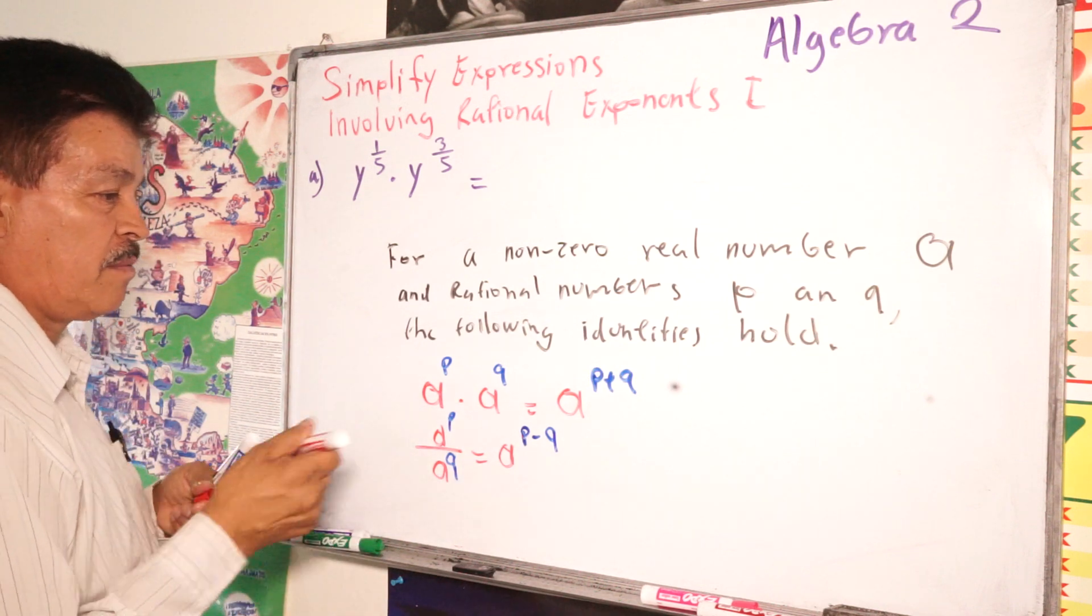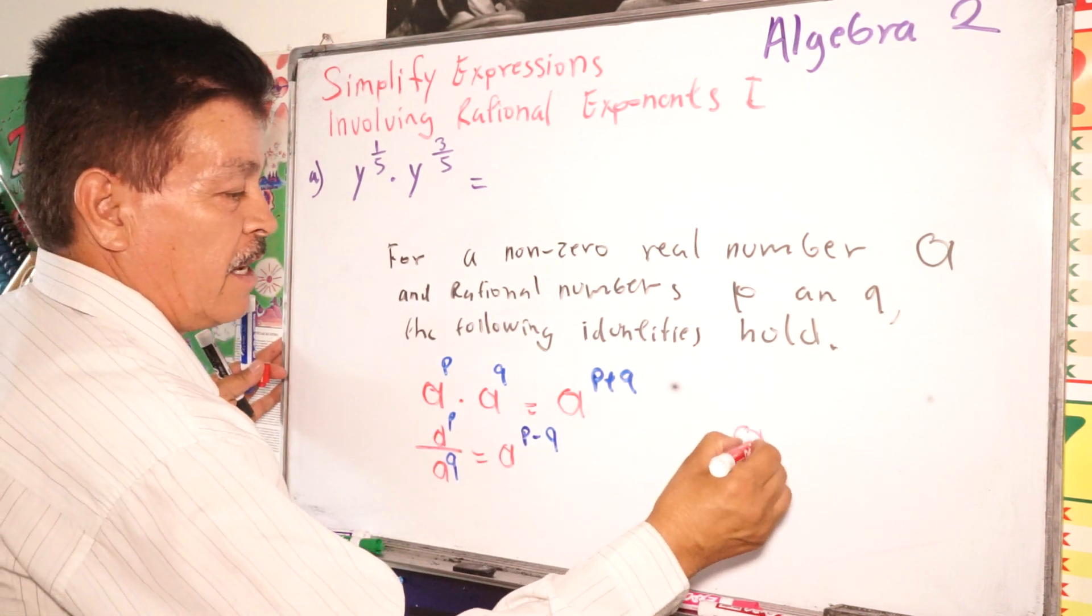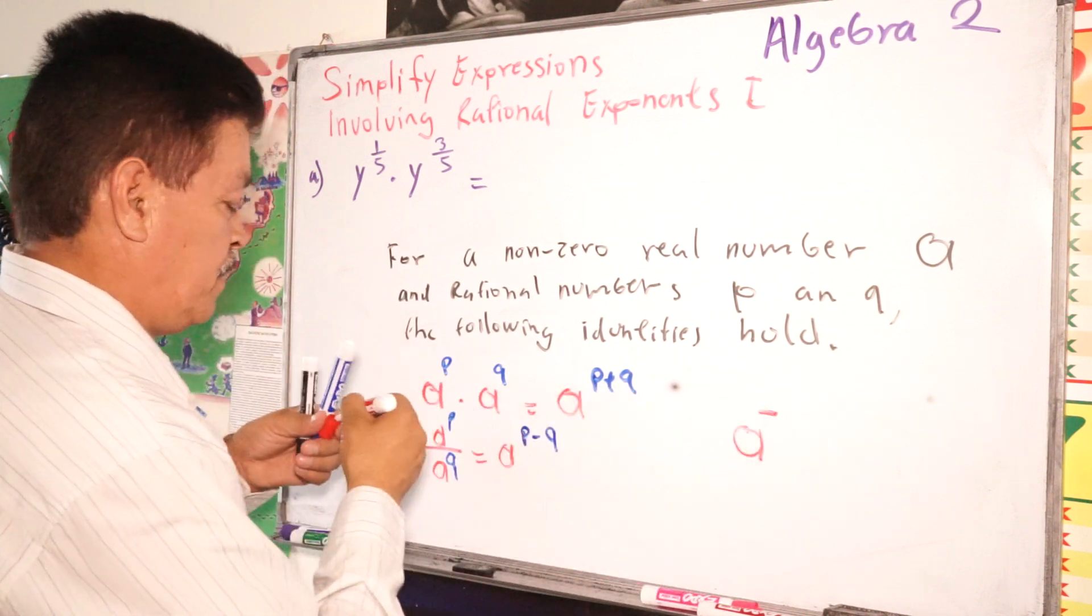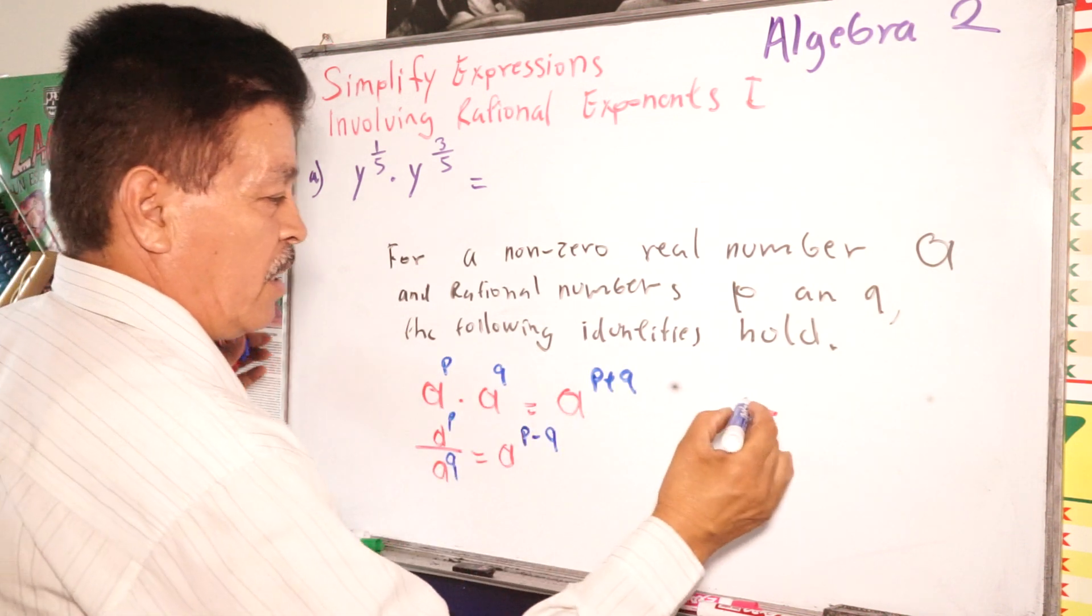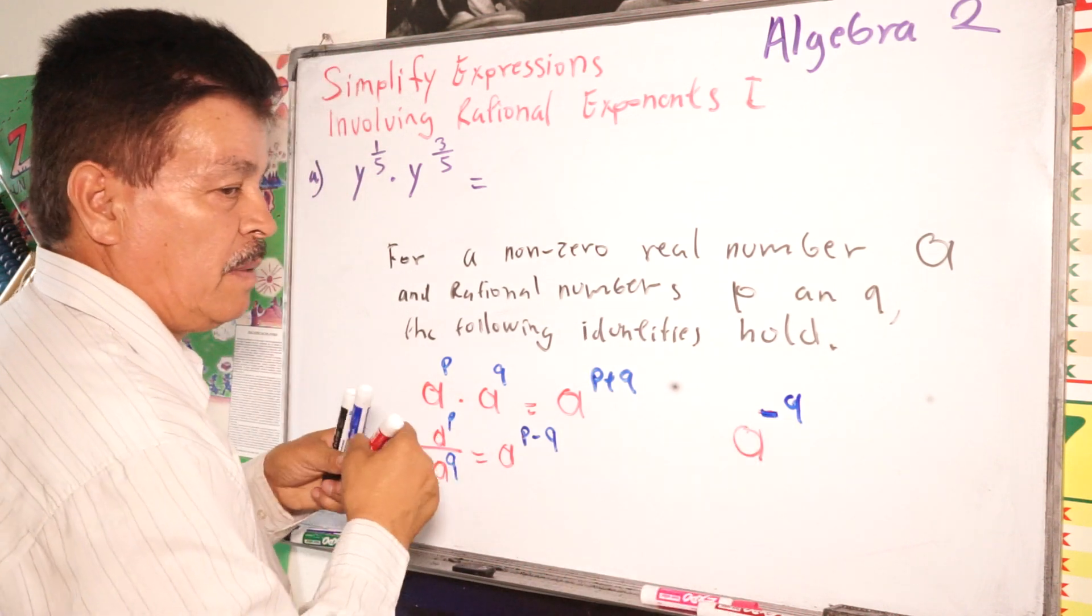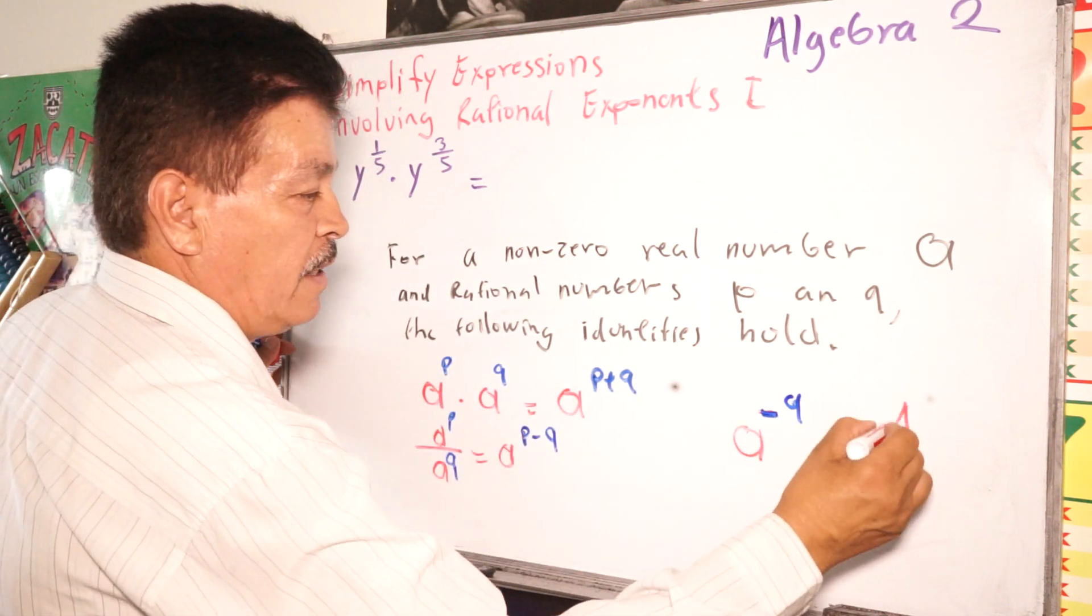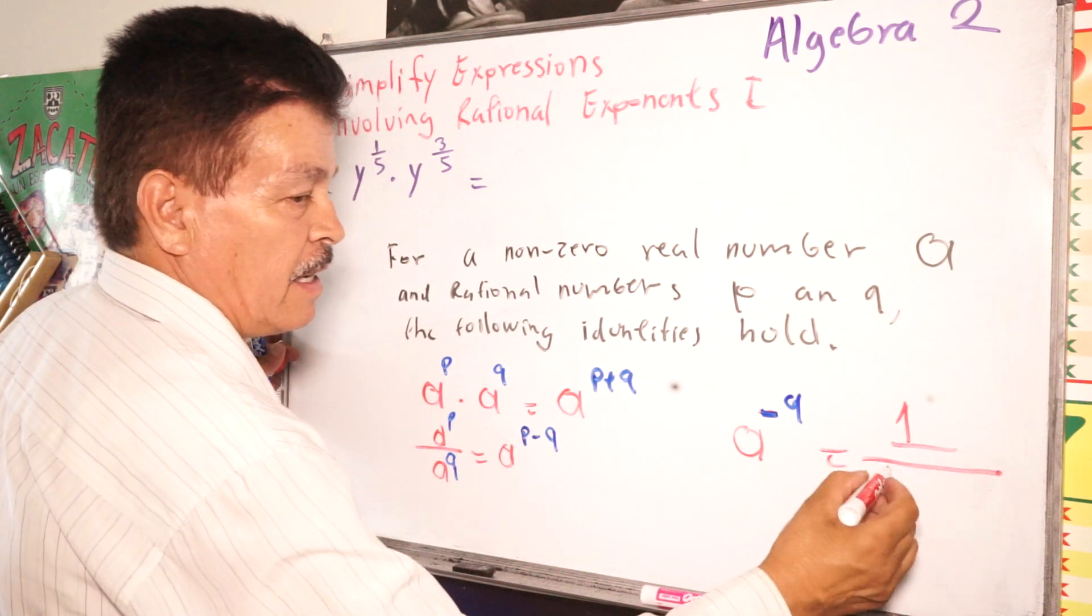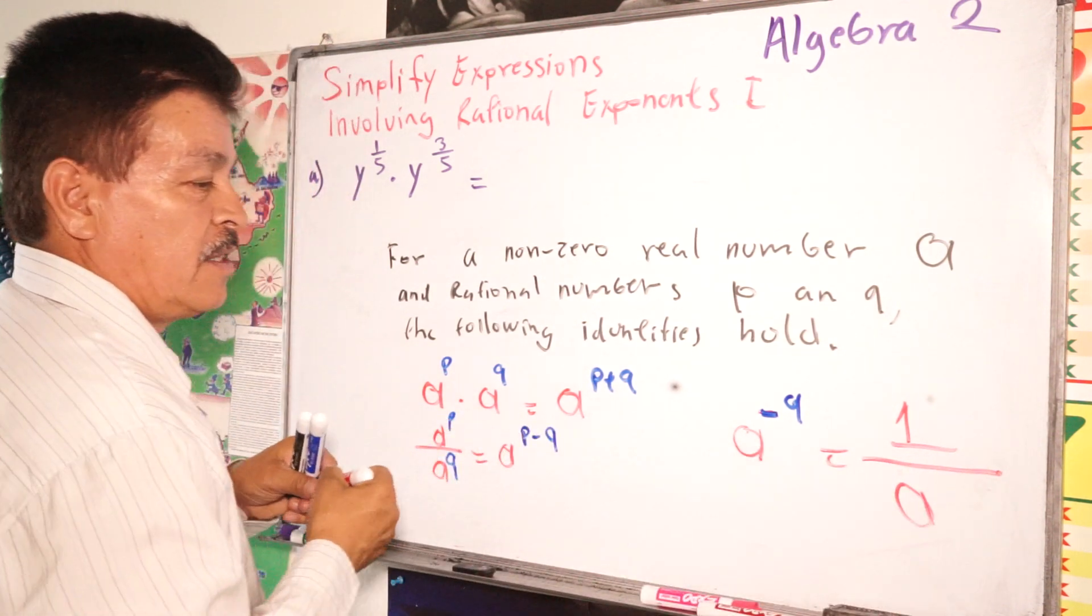And then we have another more rules. A to the negative Q, right? It will be equals equals 1 divided by A to the Q power.